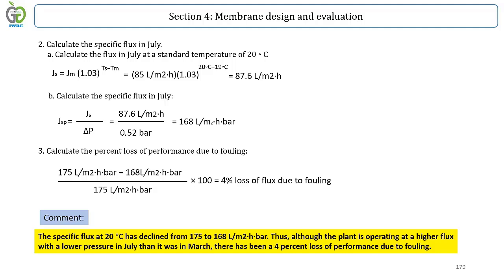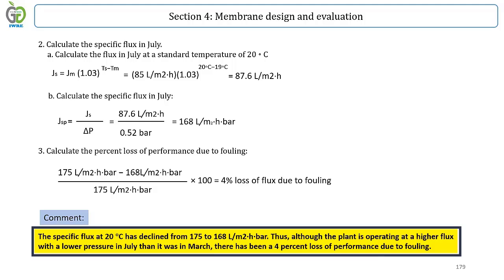After calculations, as a consequence, the specific flux at 20 degrees Celsius has declined from 175 to 168 liters per square meter in hour in bar. Thus, although the plant is operating at a higher flux with lower pressure in July than it was in March, there has been a four percent loss of performance due to fouling.